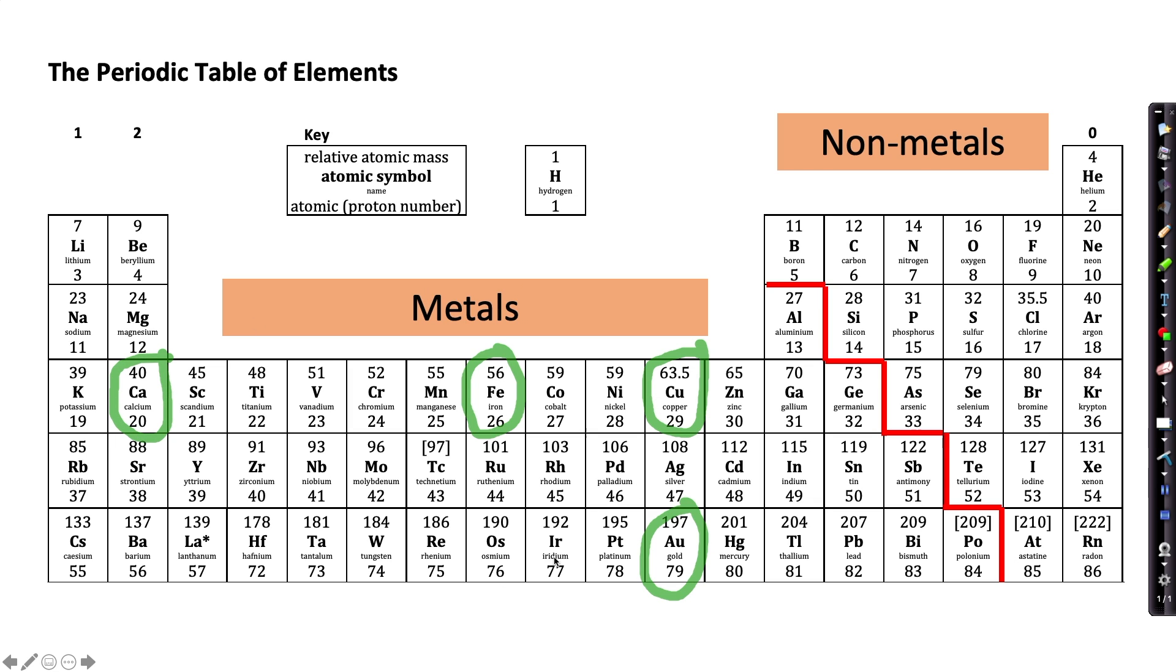But all of these elements to the left of that red line have similar properties. On the right hand side are all the non-metals, for example, oxygen and chlorine.